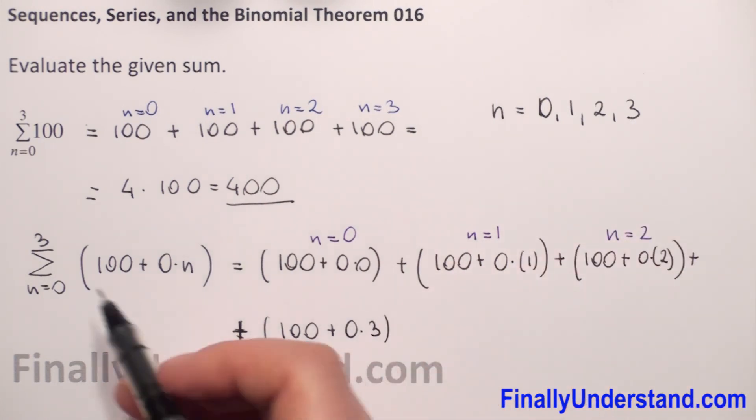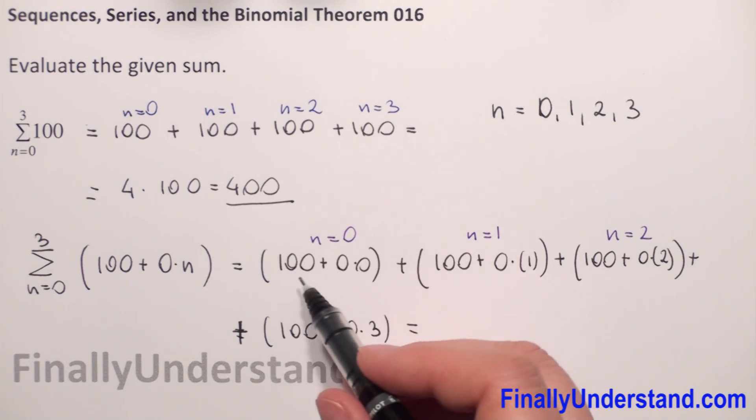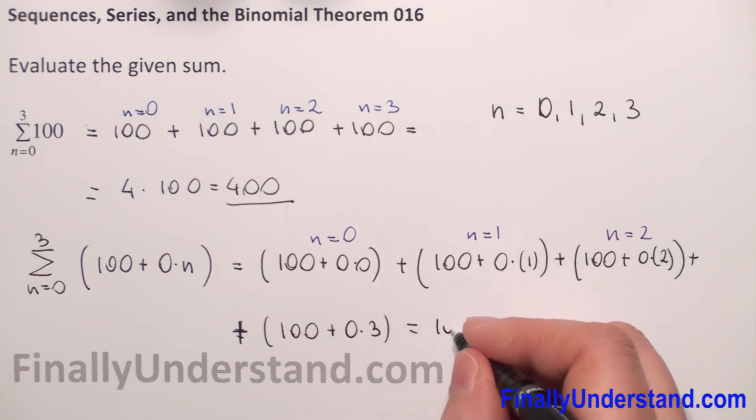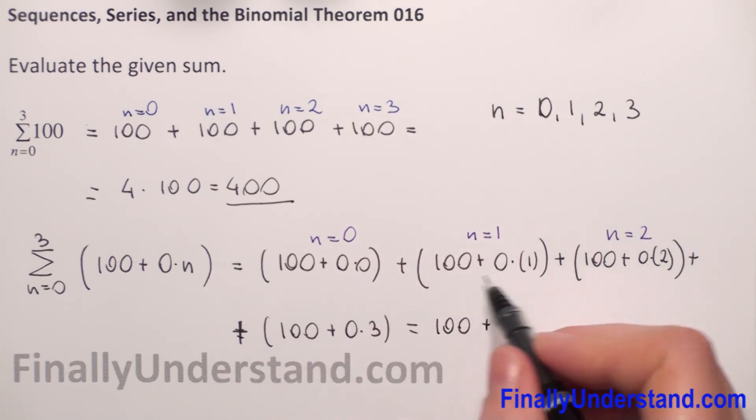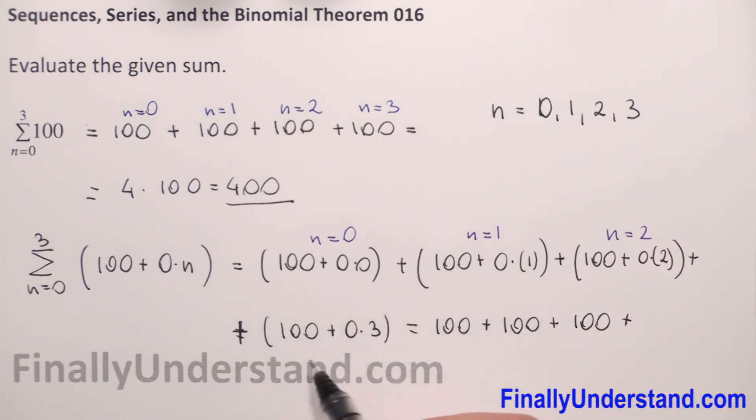The upper limit is 3. What we have in parentheses is 100 plus 0 plus 0 plus 0, which is 100 for each term. 100 plus 0 times 2 is 100, 100 plus 0 times 1 is 100, and 100 plus 0 times 3 is 100. So we get 4 times 100, which equals 400.